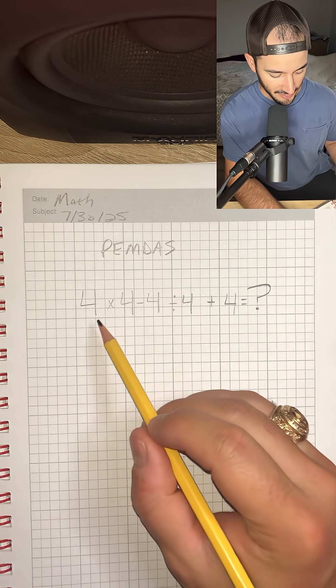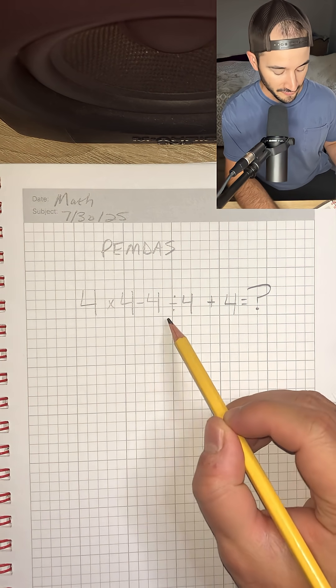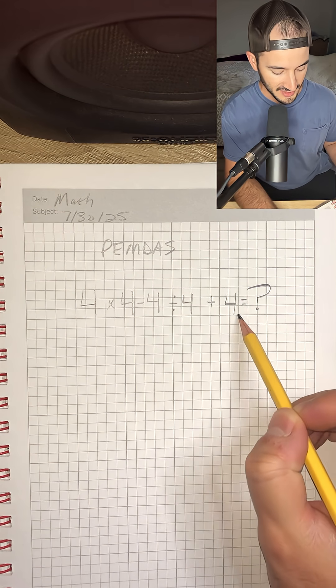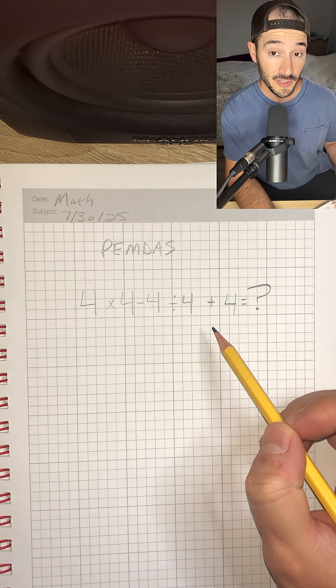Can you do this viral math problem? We have 4 × 4 - 4 ÷ 4 + 4 = ? And we're going to be using PEMDAS.